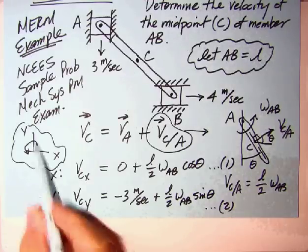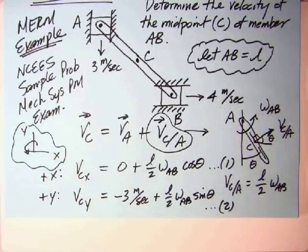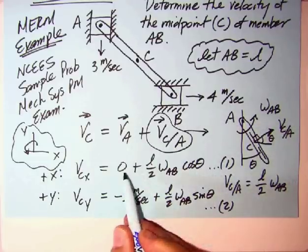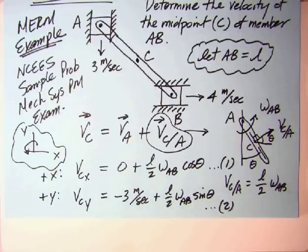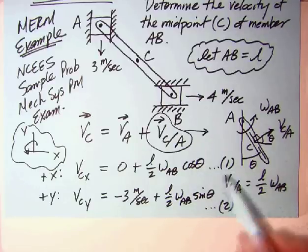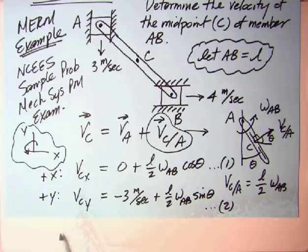To save YouTube time, I've drawn our standard coordinate system, X, Y, and counterclockwise. I break this vector equation up into two scalar components. In the X direction, we have VCX and VCY. Velocity of A doesn't have an X, so we put a zero there, and it has a Y, but it's downward, minus 3 meters per second. Then we have the components of VCA, which is L over 2 omega AB, horizontal is cosine, vertical is sine. We've got two equations, but three unknowns: VCX, VCY, and omega AB. So we need to find omega AB before we can proceed.